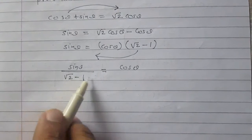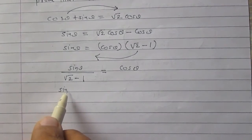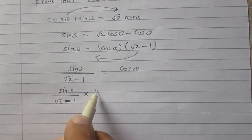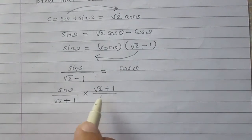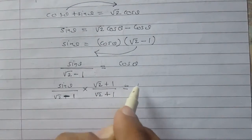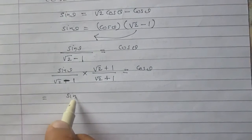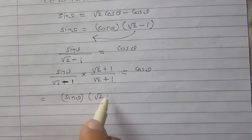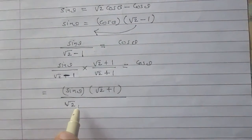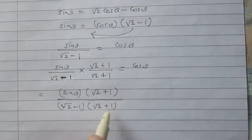The term sin θ divided by (square root of 2 minus 1) can be rationalized. We will multiply both the numerator and denominator by (square root of 2 plus 1), keeping it all equal to cos θ. This gives sin θ times (square root of 2 plus 1) in the numerator, divided by the product of (square root of 2 minus 1) and (square root of 2 plus 1) in the denominator.